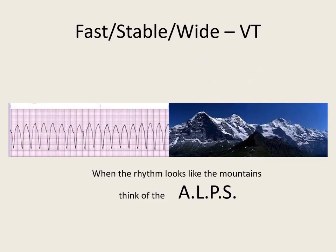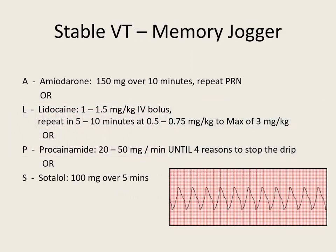Let's move on to fast, stable, and wide. Our memory jogger is: when your rhythm looks like the mountains, think of the Alps. Those Alps medications are amiodarone, lidocaine, procainamide, or sotalol. We don't want to use any of these medications together because they're all used to slow the heart down, and combining them might slow and stretch that mountain rhythm out into asystole.